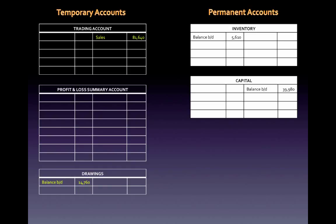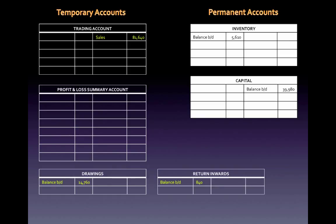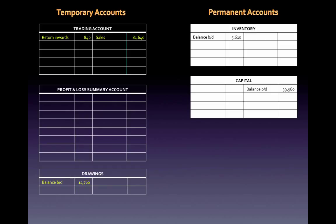Because there were sales returns — return inwards — that is also a temporary account and needs to be cleared off as well. The return inwards account has a debit balance, a reverse of sales. To zeroize it, I credit the return inwards and debit the trading account, transferring the 840 into the trading account and zeroing the return inwards account. So now I have cleared both sales and return inwards into the trading account.